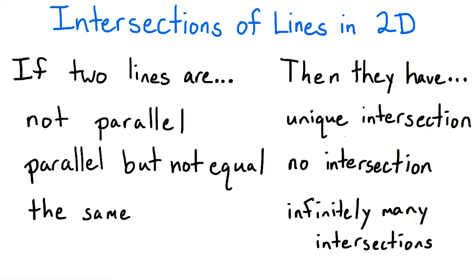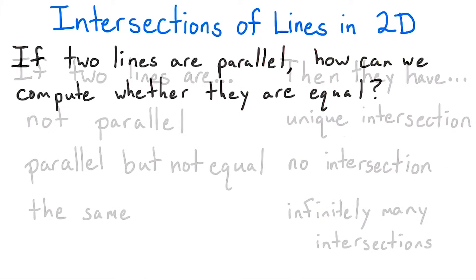So, given two lines in two dimensions, how can we tell whether they have an intersection? Well, first we should check whether they are parallel by looking at their normal vectors. If their normal vectors are parallel, then we need to check whether they are the same line.